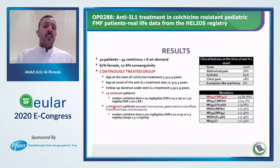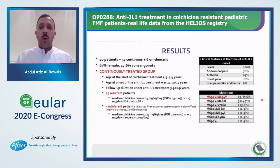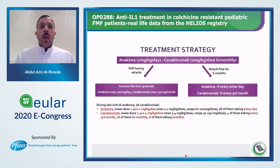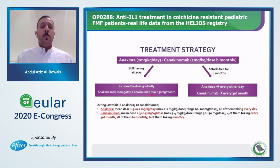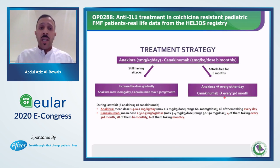Results: 40 patients were collected — 34 on continuous treatment and 6 on on-demand treatment. 65% were female and 17.5% had positive consanguinity history. In the continuously treated group, age at start of colchicine treatment was 5.5 years, age at onset of anti-IL-1 treatment was 11.5 years, and follow-up under anti-IL-1 treatment was 4 years. 29 patients were resistant and 5 were intolerant. Almost all patients had fever and the majority had abdominal pain and arthritis. The most frequent mutation was homozygous M694V.